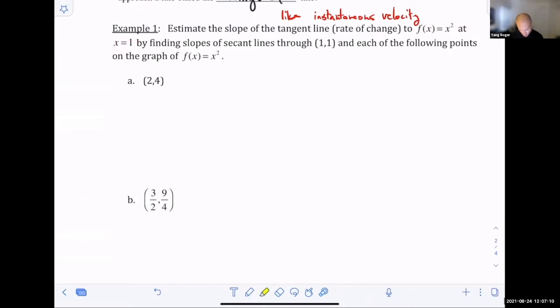So this one, one, right? If you put one in for x, you get one squared, which is one. So this one, one, this is the fixed point.